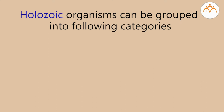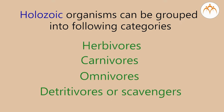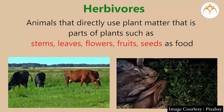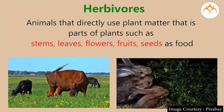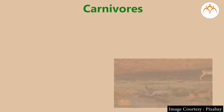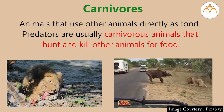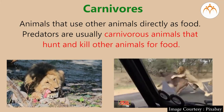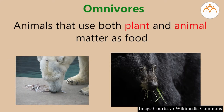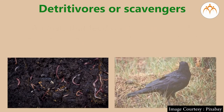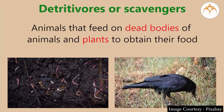Holozoic organisms can be grouped into the following categories: herbivores, animals that eat plants; carnivores, animals that hunt and kill other animals for food; omnivores, animals that use both plant and animal matter as food; and detritivores or scavengers, animals that feed on dead bodies of animals and plants to obtain their food.